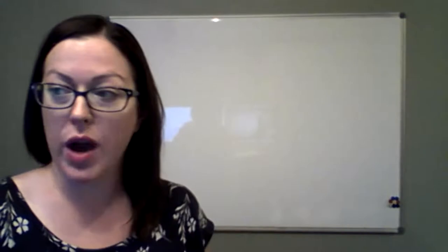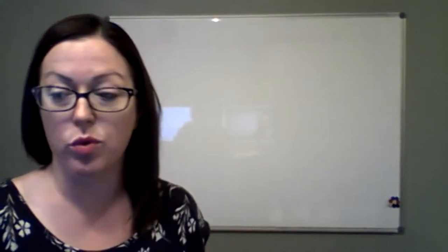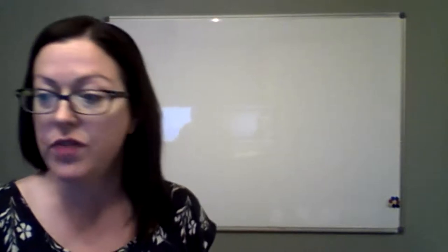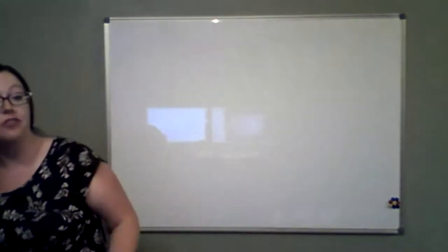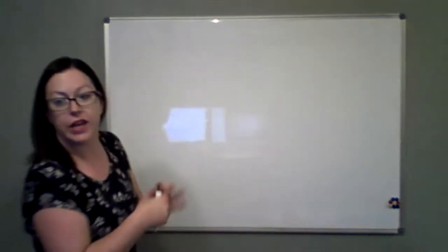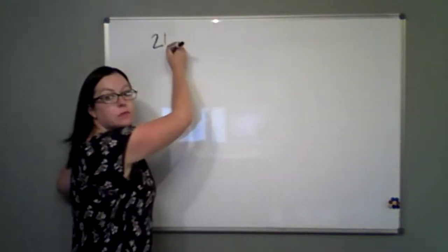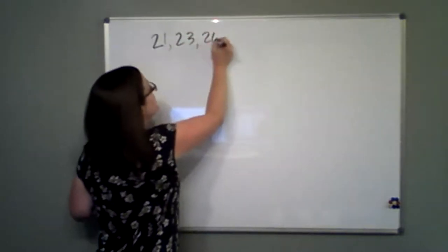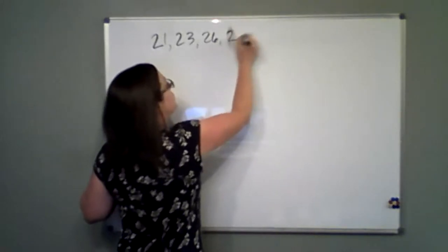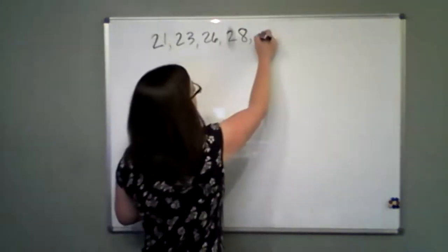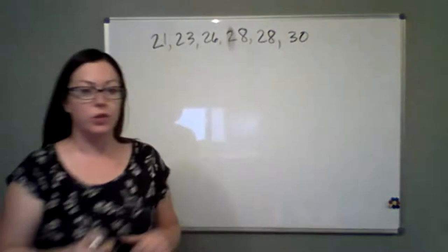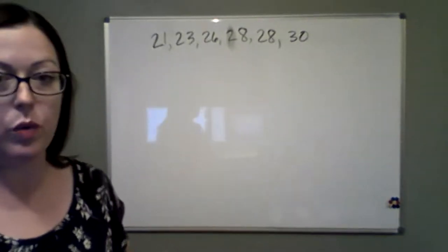So 6.3 was graphing and analyzing one variable. For the question that I see, it says the highway mileage, MPG, for a sample of five different models of a car company can be found below, finding the mean, median, mode, and range. So the mean we talked about being the average, where we add all of our different values up, and then we divide it by the different number of integers we were dealing with. So if I have a 21, 23, 26, I forgot the 2, 28, 28, and 30.